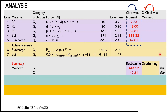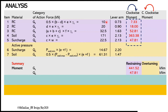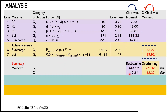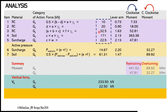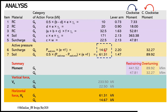The clockwise moments can be determined by multiplying the vertical force with the level arms. This moment can be summed up following the category of the forces, either permanent or variable. The clockwise moment refers to the restraining moment. Similarly, the counterclockwise moments can be determined by multiplying the horizontal force with the level arms; the counterclockwise moment refers to the overturning moment. The total vertical force in Gk and Qk can be determined by summing up the appropriate forces from items 1 to 5, whereas the total horizontal force in Gk and Qk can be determined by summing up the appropriate forces from items 6 to 7.